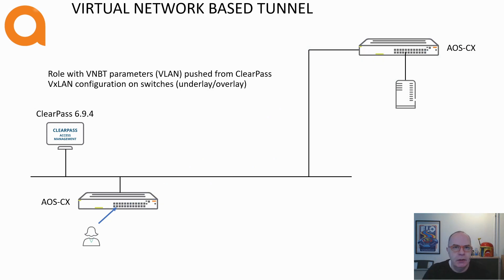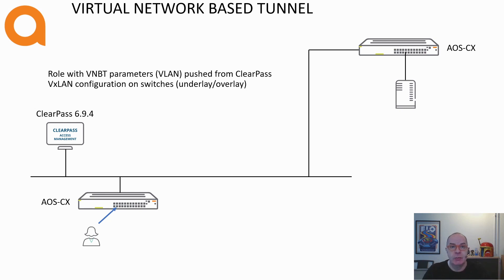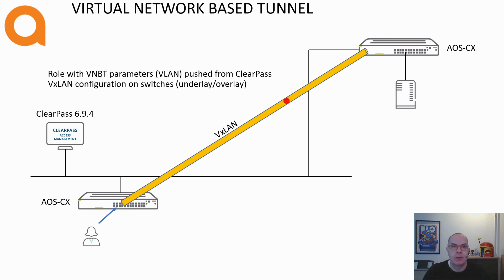Another new feature in AOS CX is virtual network-based tunneling (VNBT). With user-based tunneling, a GRE tunnel is established between an endpoint connecting to a switch and a Gateway. With VNBT, a VXLAN tunnel can be established between two switches without the intervention of a Gateway. This is especially useful in environments where you do not need advanced security, but do not want to rely on the underlying network for communication between endpoints.